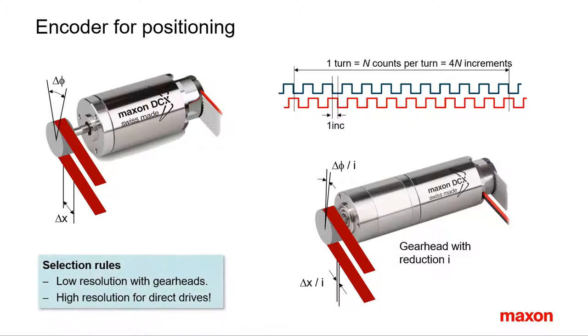On the other hand, high resolution encoders of more than 1000 counts per turn are often used in direct drives. For the following, we focus on motors alone, assuming that the required resolution has been calculated back to the motor shaft level.